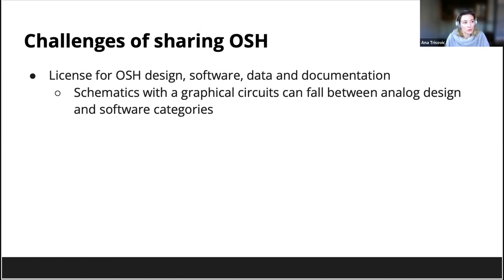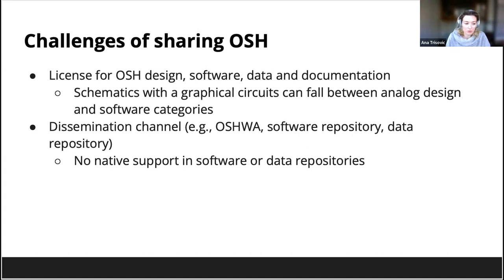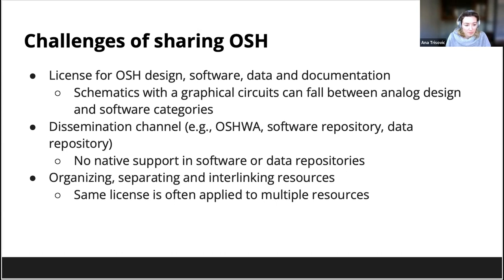Another licensing complexity arises when one open source hardware is part of another — for example, an Arduino Uno unit inside another open source hardware product — making the licensing of the composite product quite complex. The next challenge is dissemination channels, such as software or data repositories. Currently there is no native support in software or data repositories — for instance, GitHub does not support licensing for open source hardware, and data repositories also lack this support.